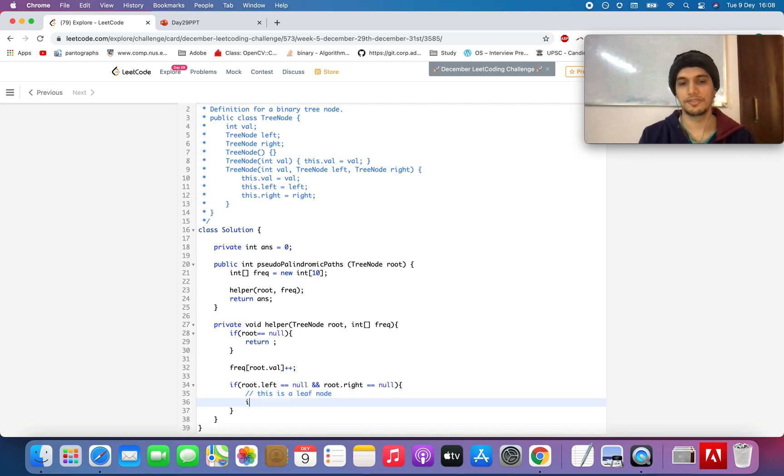Since it's a leaf node, it's a possible contender for pseudo-palindromic string, is palindromic permutation. I am defining another method and I'll pass the frequency array to it. If it is, we will increment the answer count.